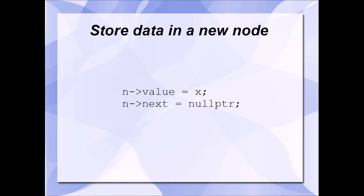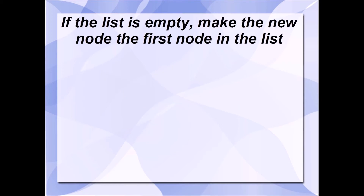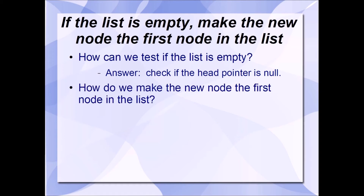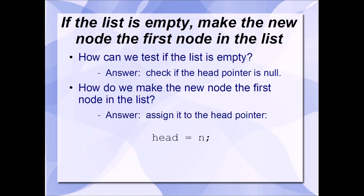The other member of this data structure is a next pointer, which contains the memory address of the following node. Since this is an append algorithm, we will always be adding the new node to the end of the list. Nodes at the end of a linked list always point to null. Therefore, this new node's next pointer will be set to null. If the list is empty, we need to make the new node the first node in the list. We can test if the list is empty by checking if the head pointer is null. To make the new node the first node, we assign it to the head pointer.